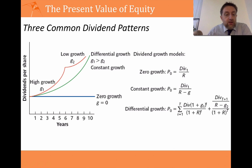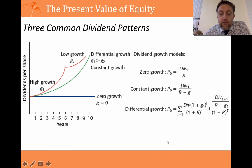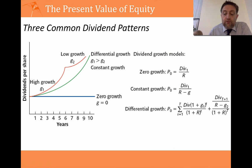The third type involves differential growth — a high growth rate initially, followed by a low, sustainable growth rate that goes on forever. That formula looks very scary, but I'm going to show you how to do it step by step, so you don't need to remember the formula.